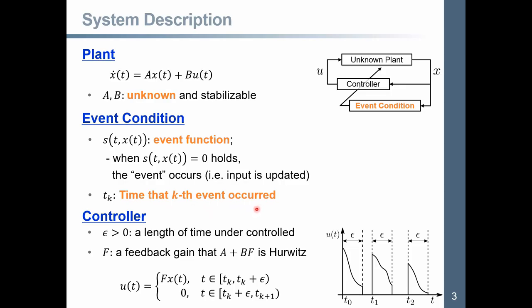We write tk as the time that the event occurs. Finally, for this tk, the controller is defined. Y is the length of time under control, and F is the feedback gain such that A plus BF is Hurwitz.